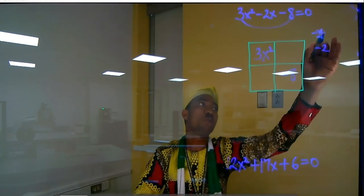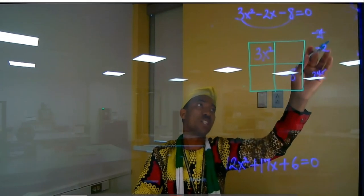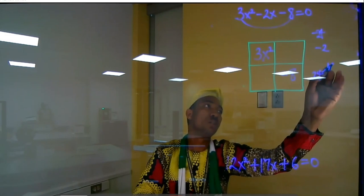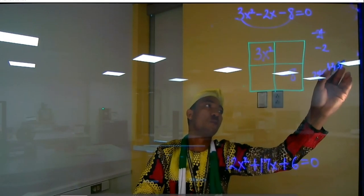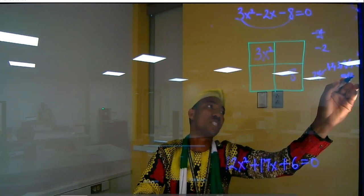So I'm looking for two factors of 24 that I can multiply together to give me minus 24, to sum it to give me minus 2. Factors of 24: 1, 2, 3, 4, 6, 12, and 24 itself.